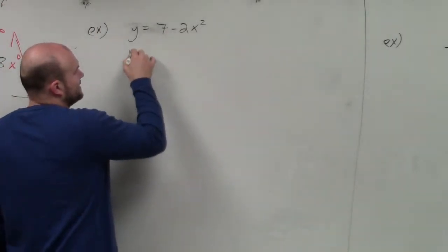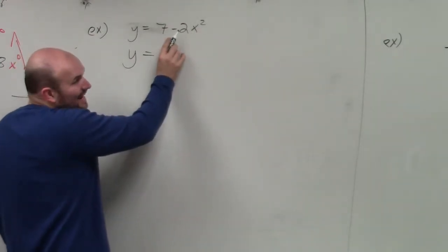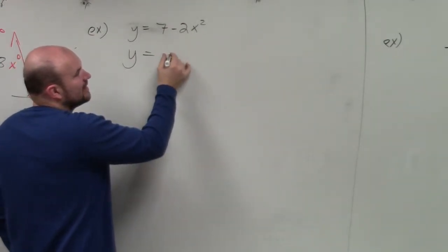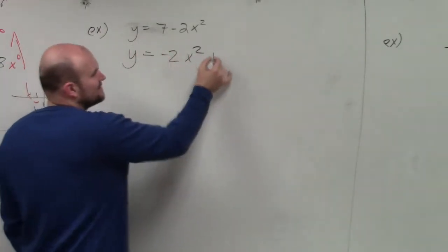A lot of students make the mistake here. This is a negative 2, so I got to rewrite this as negative 2x squared. That's a positive 7.